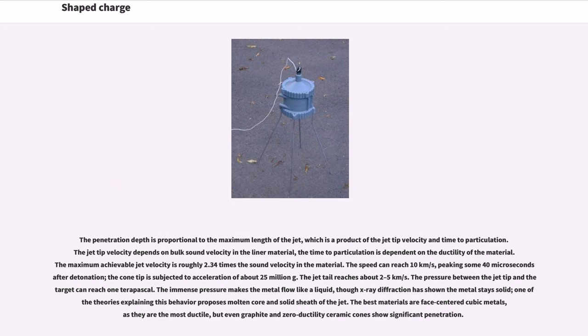The penetration depth is proportional to the maximum length of the jet, which is a product of the jet tip velocity and time to particulation. The jet tip velocity depends on bulk sound velocity in the liner material. The time to particulation is dependent on the ductility of the material. The maximum achievable jet velocity is roughly 2.34 times the sound velocity in the material. The speed can reach 10 kilometers per second, peaking some 40 microseconds after detonation. The cone tip is subjected to acceleration of about 25 million g. The jet tail reaches about 2-5 kilometers per second. The pressure between the jet tip and the target can reach 1 terapascal. The immense pressure makes the metal flow like a liquid, though X-ray diffraction has shown the metal stays solid. One theory explaining this behavior proposes molten core and solid sheath of the jet. The best materials are face-centered cubic metals, as they are the most ductile, but even graphite and zero-ductility ceramic cones show significant penetration.